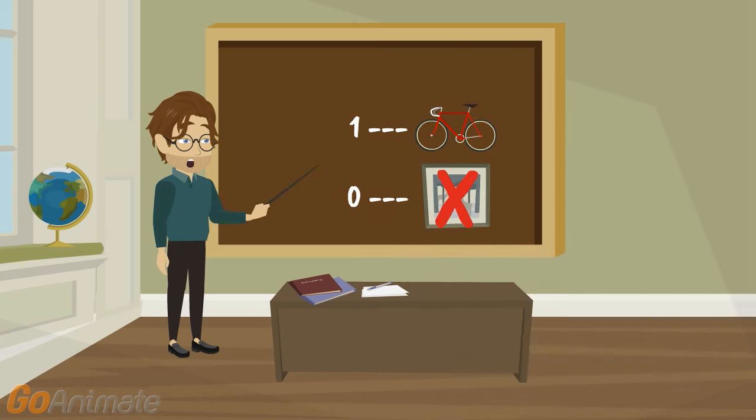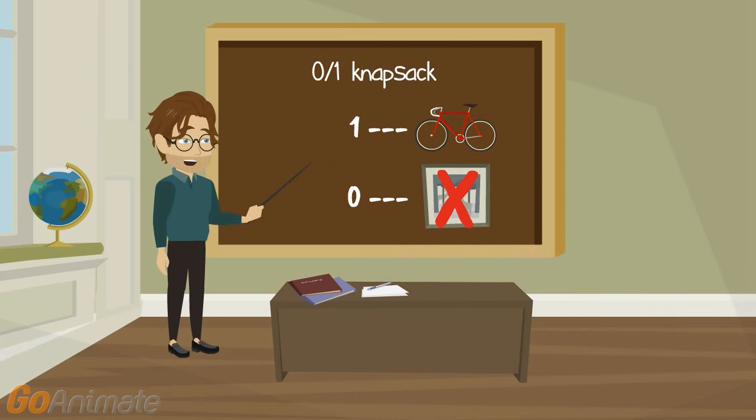This type of optimization problem is called 0-1 knapsack problem. 0-1 because either you take nothing of an object or all of it. So you can either take the whole bicycle and that will be representative by one, or not taking any part of the painting and that will be representative by a zero.